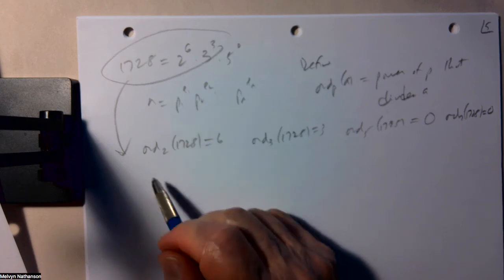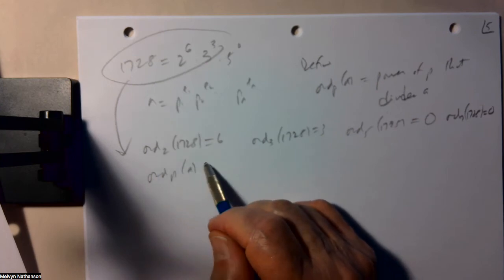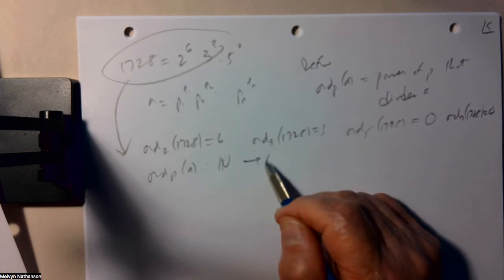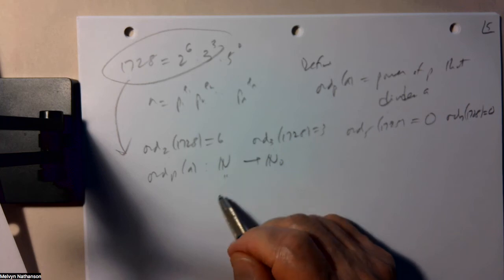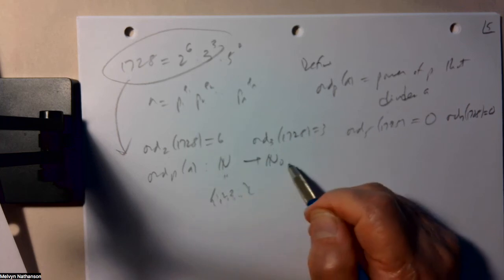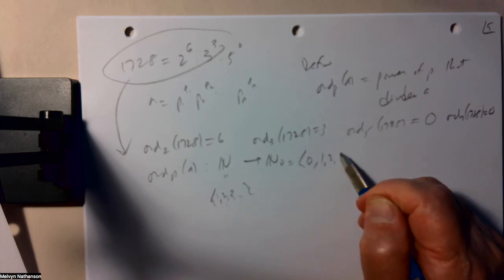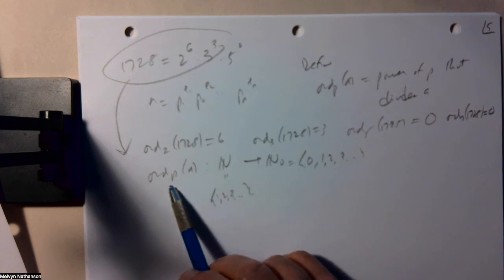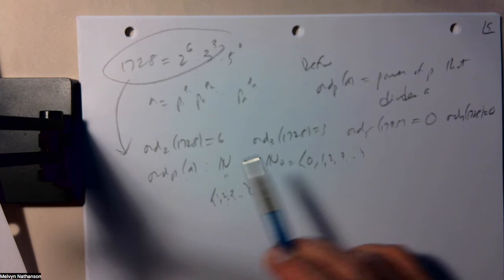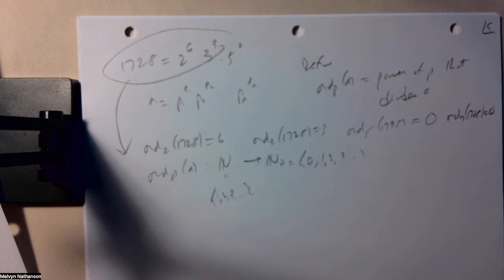Ord_5 of 1728. Well, 5 doesn't divide this. So you can think of this as times 5 to the 0, which is 1. The highest power of 5 that divides 1728 is the 0th power. Just as the highest power of 7 that divides 1728 is 0. So we have this useful function, ord_p of a, which is a function from the positive integers to the non-negative integers.